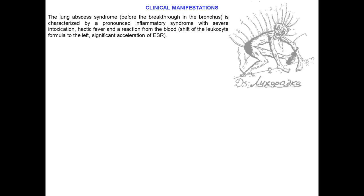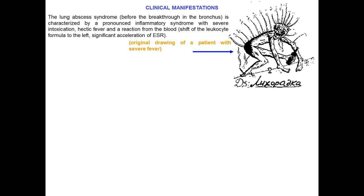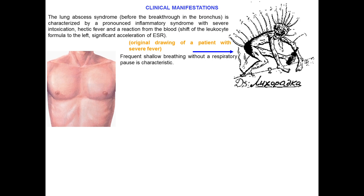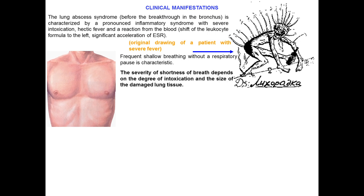Clinically, we distinguish two stages: before breakthrough into the bronchus, and after breakthrough. The lung abscess syndrome before the breakthrough is characterized by a pronounced inflammatory syndrome with severe intoxication, hectic fever, and a shift of the leukocyte formula to the left, higher leukocytosis, and significant acceleration of ESR. Frequent shallow breathing without a respiratory pause is also characteristic.